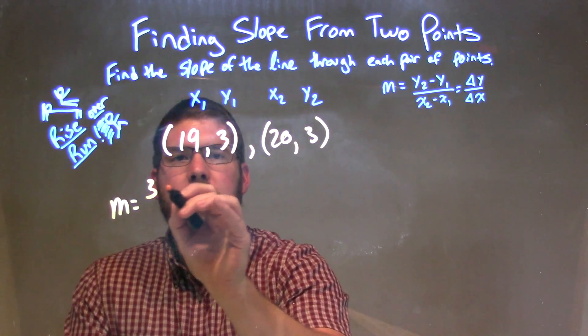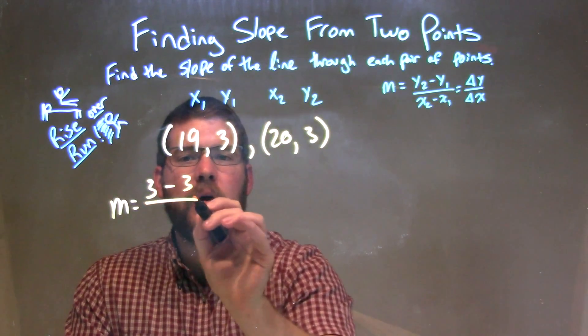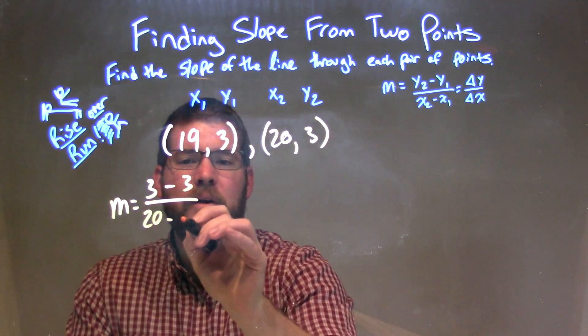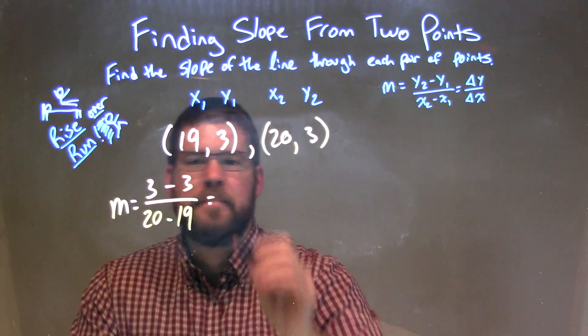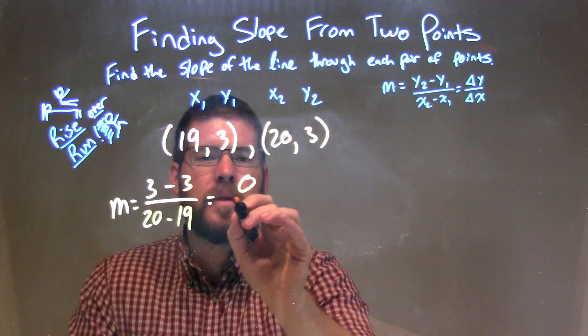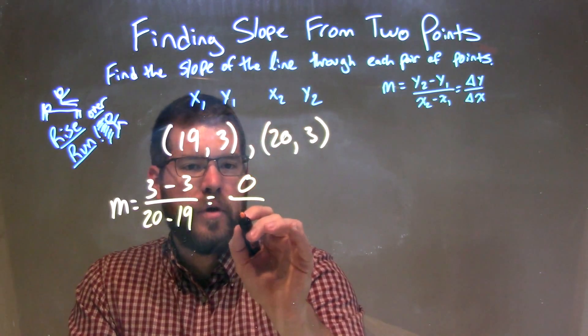So y2 being 3 minus y1, which is also 3, over x2, 20, minus x1, which is 19. We simplify it: 3 minus 3 is 0, over 20 minus 19 is just 1.